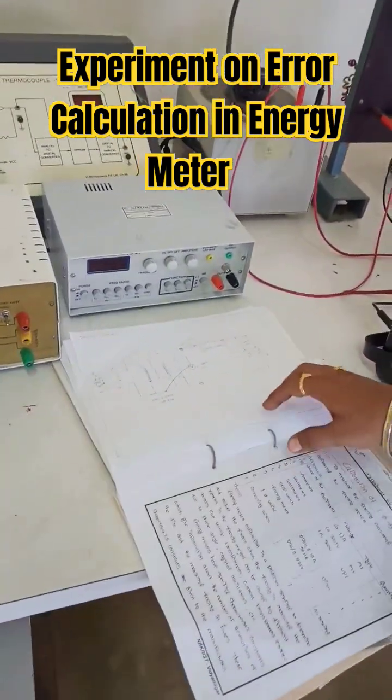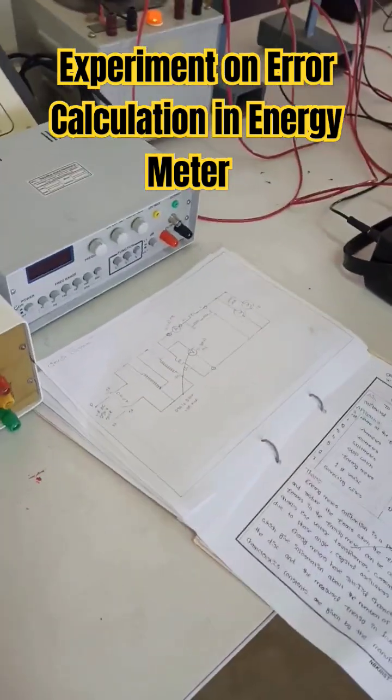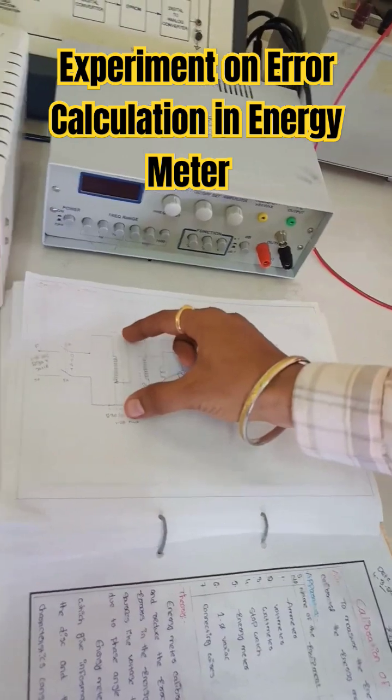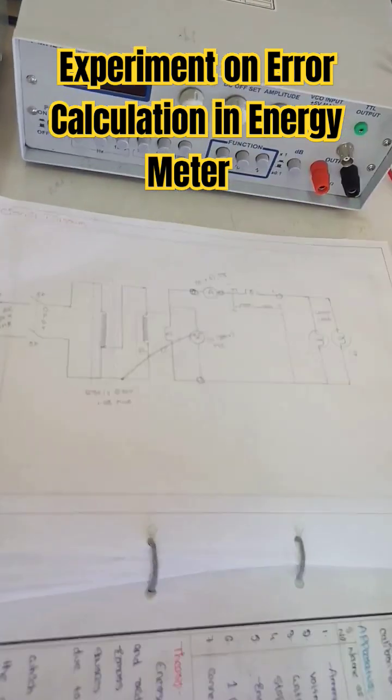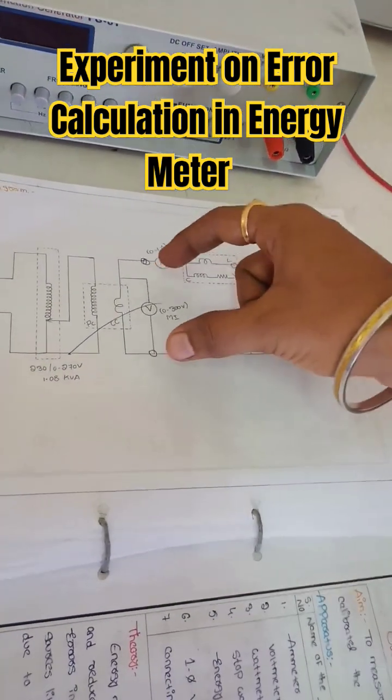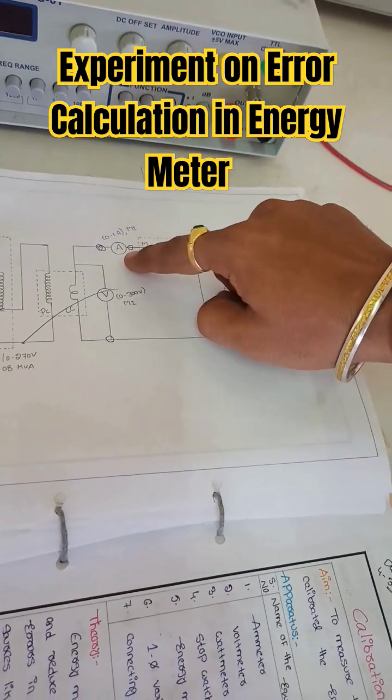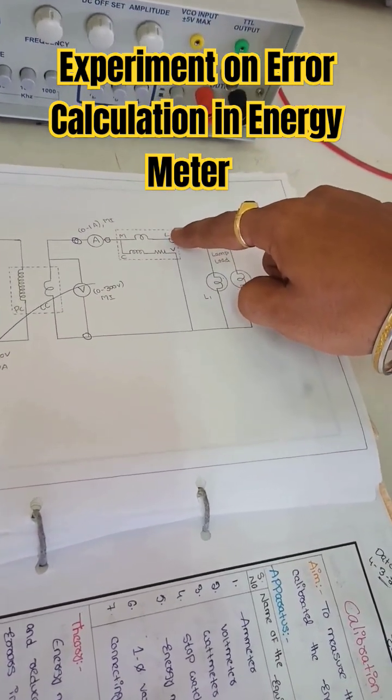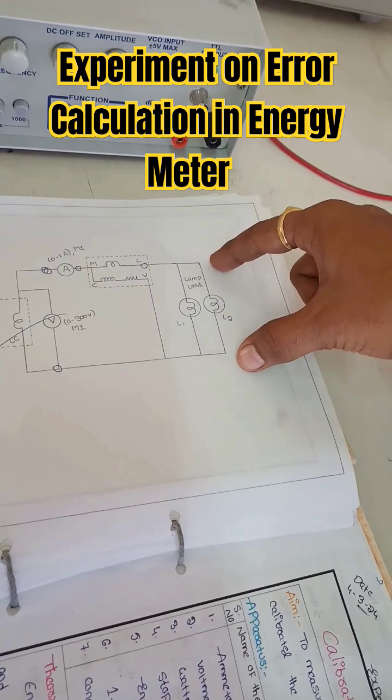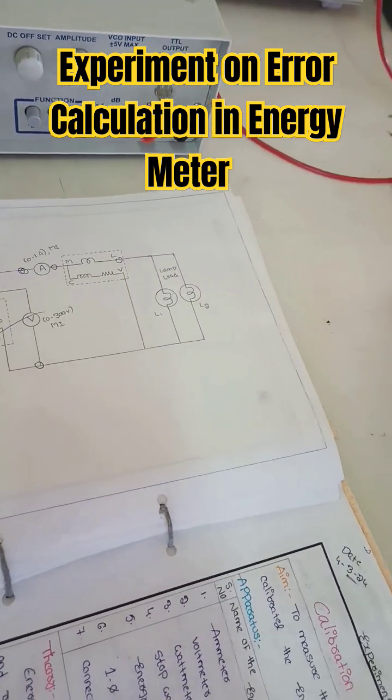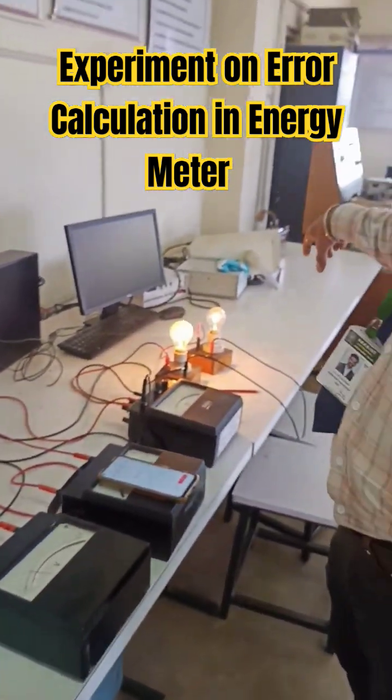Here you can have the circuit diagram. The input is an auto transformer. Here you have the energy meter, the voltmeter is connected in parallel, ammeter is connected in series, and you have a watt meter connected in series and parallel. Two loads are connected. Based on this, we had connected the circuit diagram. This is how we connected the circuit.